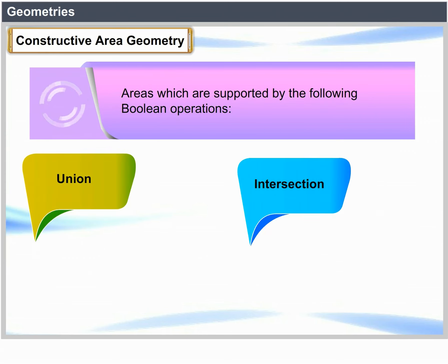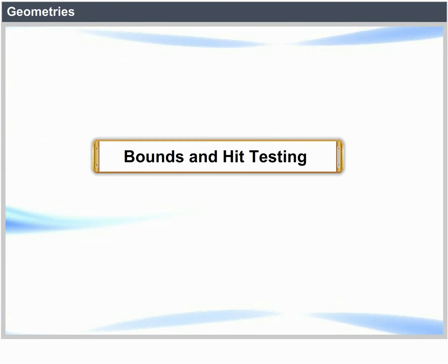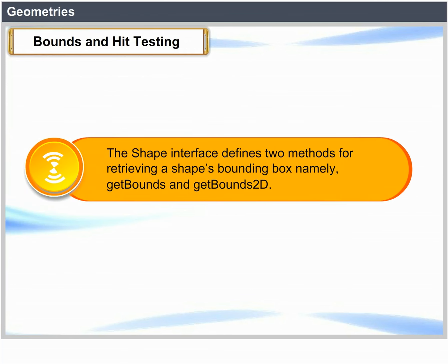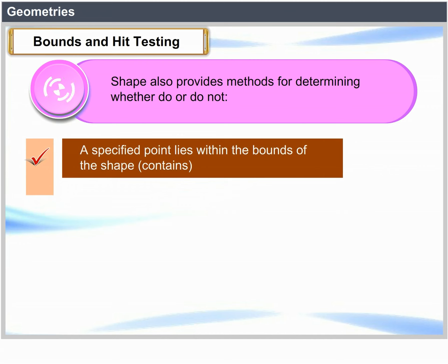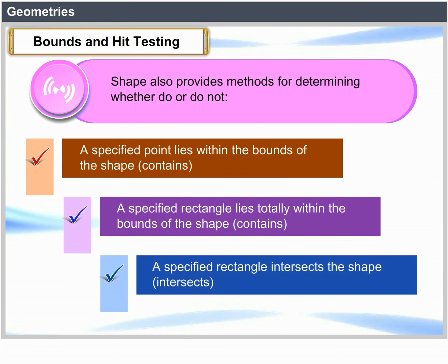Union, Intersection, Subtraction, and Exclusive OR. Bounds and Hit: A fully enclosed geometry is a bounding box rectangle. The Shape interface defines two methods for retrieving a shape's bounding box — getBounds and getBounds2D. Shape also provides methods for determining whether a specified point lies within the bounds of the shape, a specified rectangle lies within the bounds of the shape, or a specified rectangle intersects the shape.